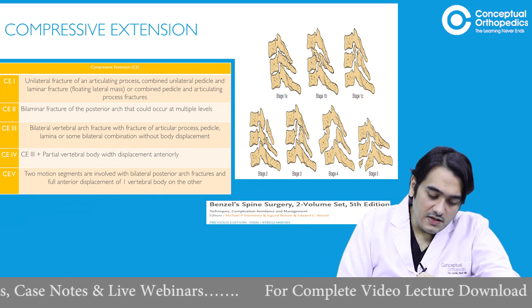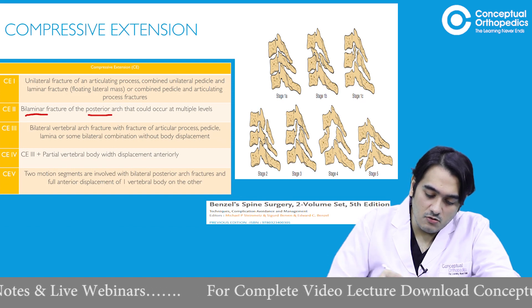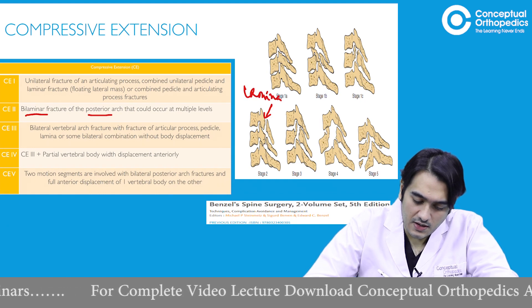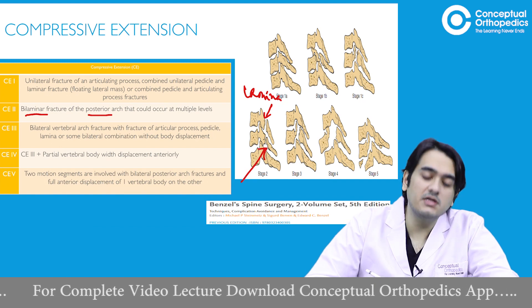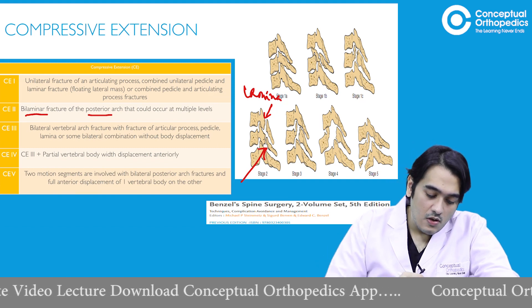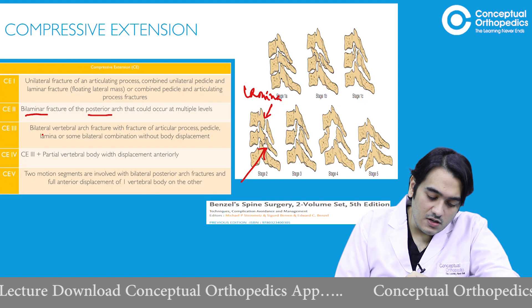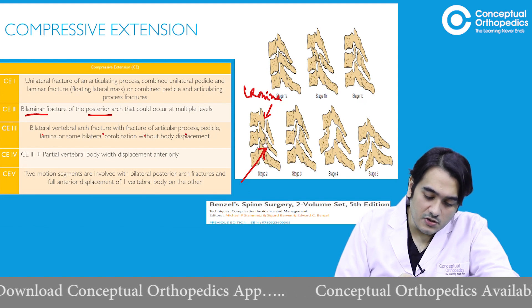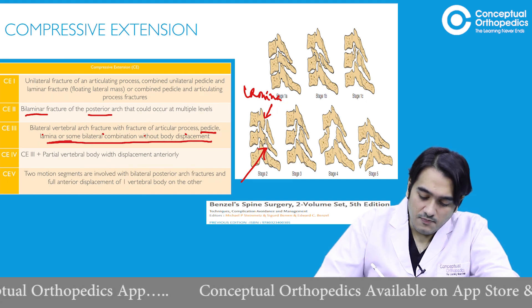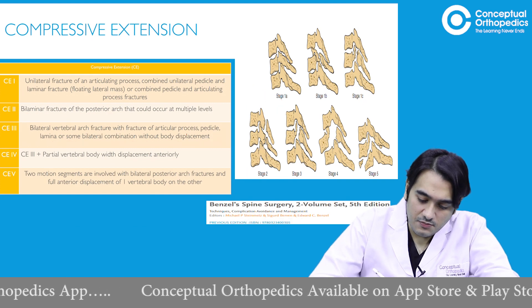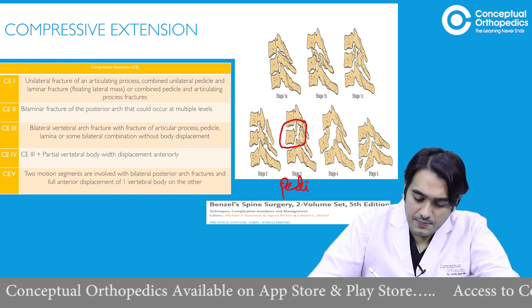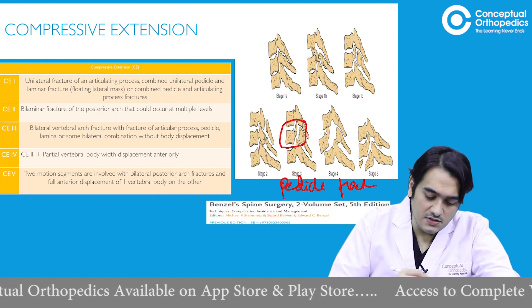In compression extension stage two, there is a bilaminar fracture of the posterior arch that can occur at multiple levels. If there is only bilateral lamina fracture, it is stage two. Stage three involves a bilateral vertebral arch fracture with fracture of the articular processes — including the pedicle — with or without some displacement. When forces progress, fractures in the vertebral arch along with pedicle fractures define stage three.